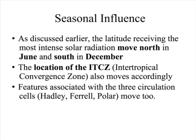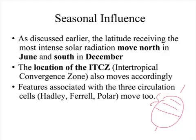We're going to continue to talk about these large-scale global winds. Remember the three-cell model piggybacked off of the single-cell model proposed by Hadley. Ideally, there are three cells, and they divide each hemisphere into thirds: from 0 to 30 you have the Hadley cell, from 30 to 60 you have the Ferrell cell, and from 60 to 90 you have the Polar cell.